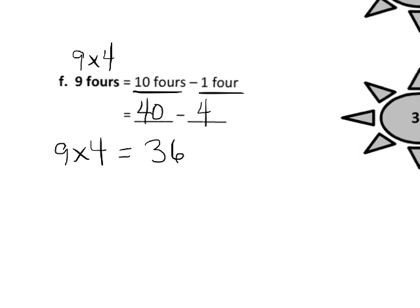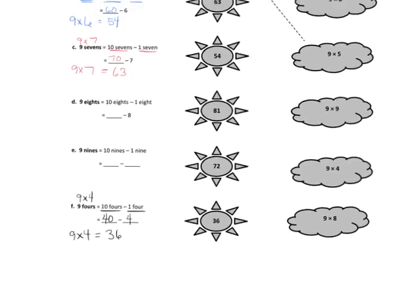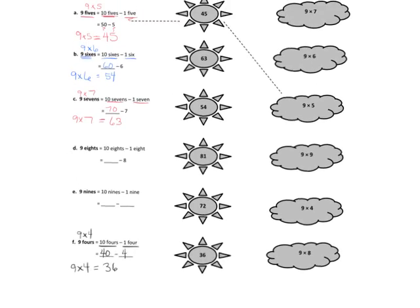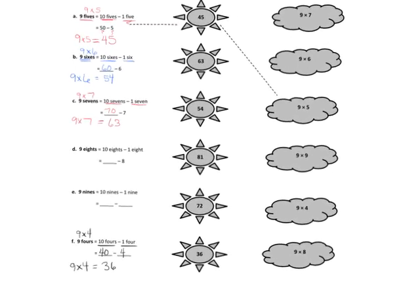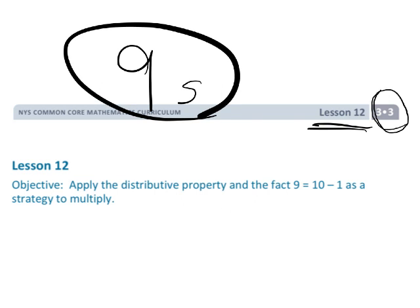And that is how we can use the concept of 9 being 1 less than 10. And that's how we can use that concept to learn our 9 times tables. And that is grade 3, module 3, lesson 12, where we're really focusing on the nines.